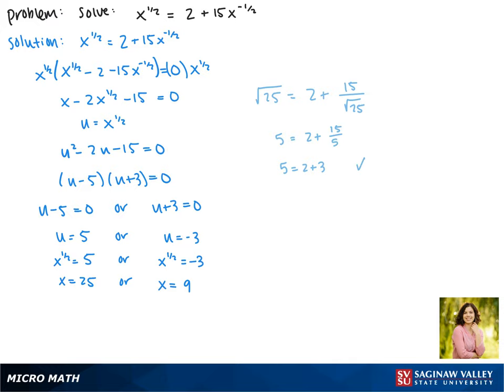Plugging in 9 gives us the square root of 9 equals 2 plus 15 over the square root of 9. This gives us 3 equals 2 plus 15 over 3. 15 over 3 is 5 so this says 3 equals 2 plus 5. This is not true so x equals 9 is extraneous and our solution to the equation is x equals 25.